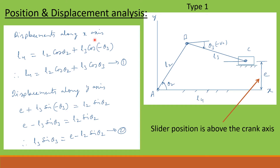Displacements along the x-axis can be written as L4 equal to L2 cos theta 2 plus L3 cos(minus theta 3). Since cos(minus theta 3) equals plus cos theta 3, the equation for horizontal x-axis displacement becomes L4 equal to L2 cos theta 2 plus L3 cos theta 3. Let us call that equation 1.